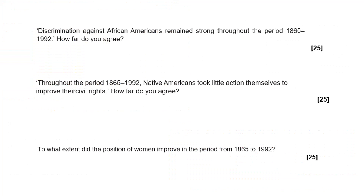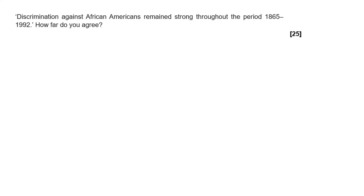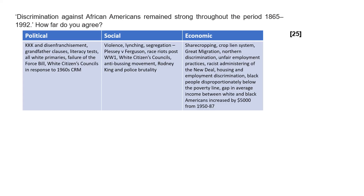You'd spend maybe 55 minutes to an hour on the interpretation question, leaving an hour and a half for three essay options from which you choose two. The first essay chosen is: 'Discrimination against African-Americans remained strong throughout the period 1865 to 1992 — how far do you agree?' The first thing to do is quickly note down relevant political, social, and economic knowledge.